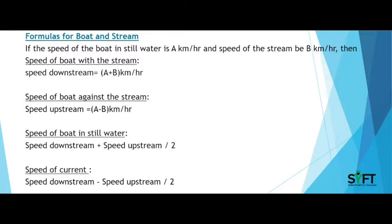Here 'a' is the speed of the boat in still water and 'b' is the speed of the stream. If we need to calculate the speed of the boat in still water, the formula is: (speed downstream + speed upstream) divided by 2. And if we need to calculate the speed of the current, the formula is: (speed downstream minus speed upstream) divided by 2.